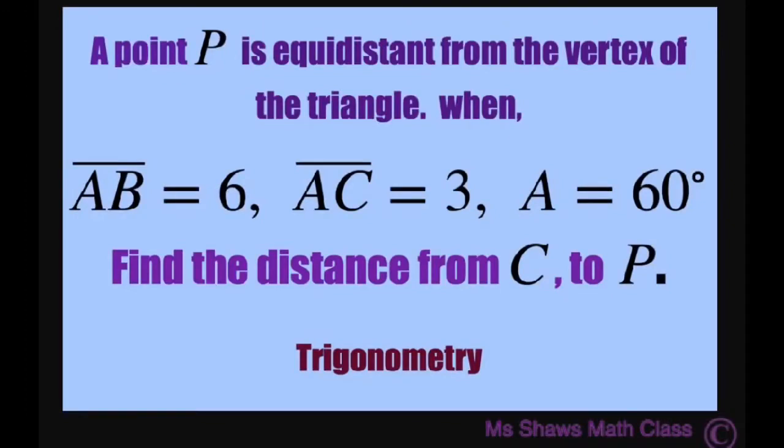Hi everyone. A point P is equidistant from the vertices of a triangle. When we have line segment AB equals 6 and line segment AC equals 3 and our angle A is 60 degrees, we're going to find the distance from C to P.